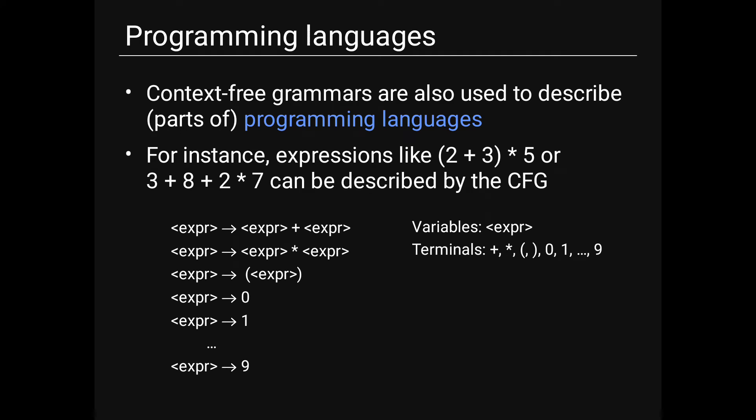Context-free grammars are also used to describe parts of programming languages. An expression like 2+3×5 or 3+8+2×7 can be described by a CFG: E → E+E | E×E | (E) | N, with N → 0 | 1 | ... | 9. The variable is E (expression), and terminals are +, ×, (, ), and digits 0 through 9.